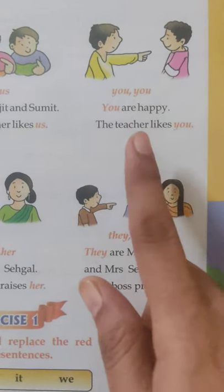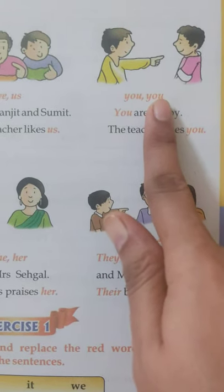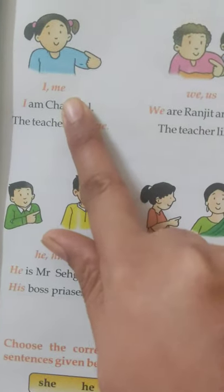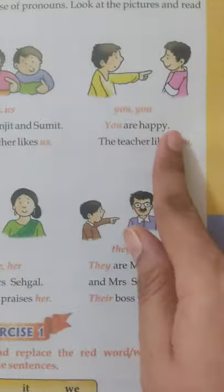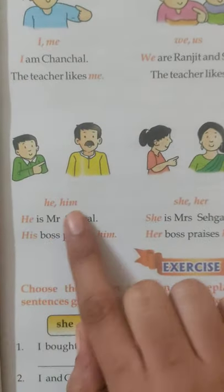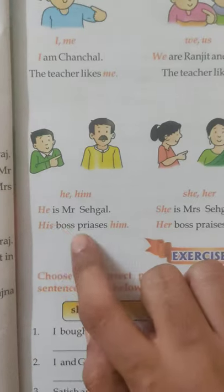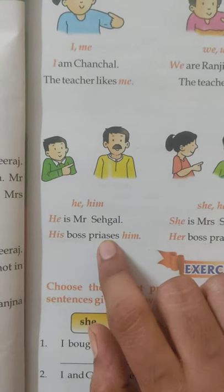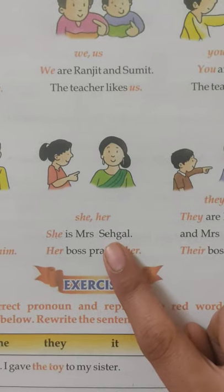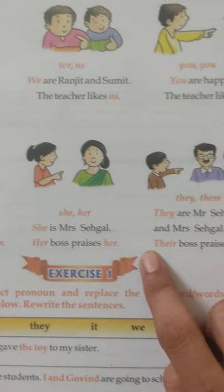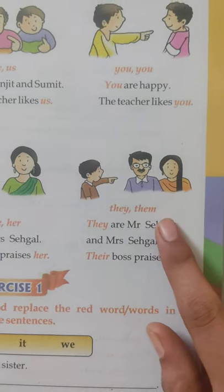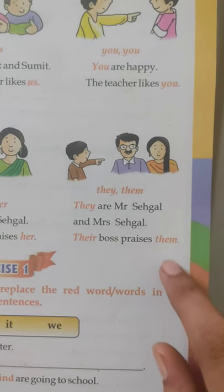Then 'you' is the person who is listening to us. The speaker is the one who is speaking, and 'I' is used for the speaker, while 'you' is used for the listener. Then comes 'he' or 'him' — that is for a male person, for a boy or a man. For a girl or a female, we use 'she' or 'her'. And for plurals — more than one person — we use 'they', 'their', 'them'.